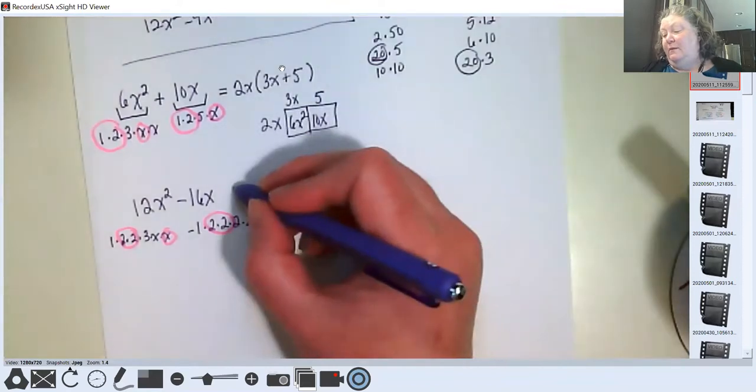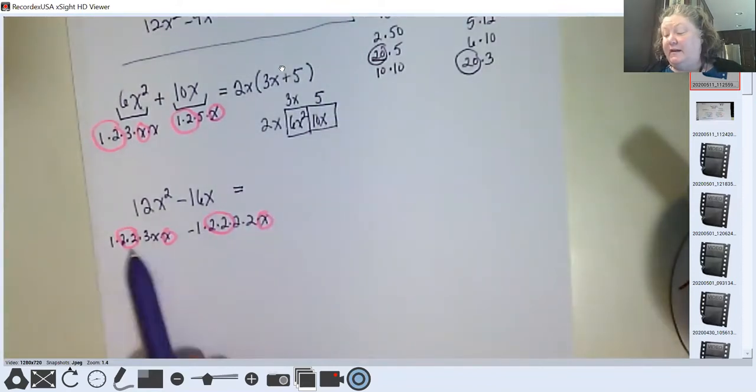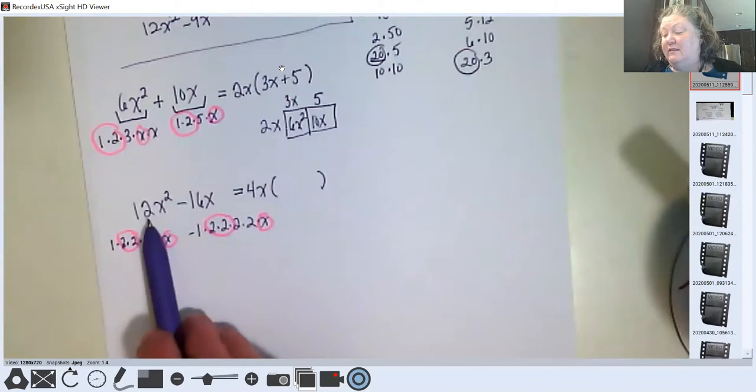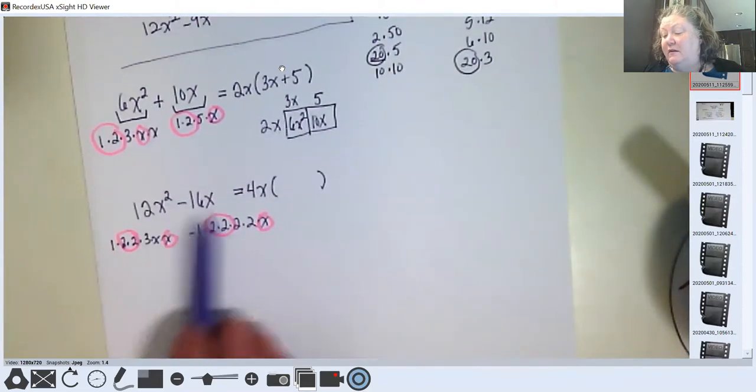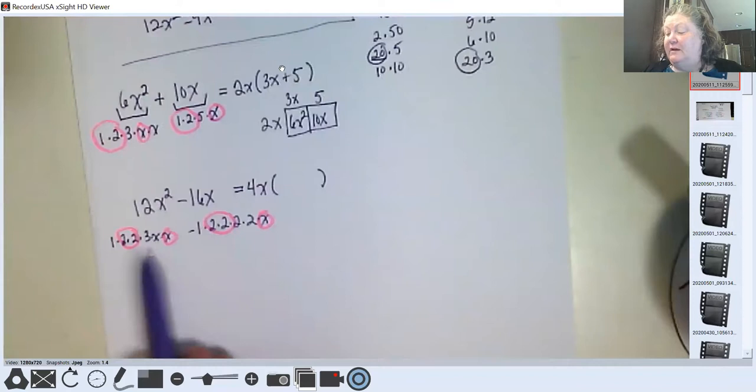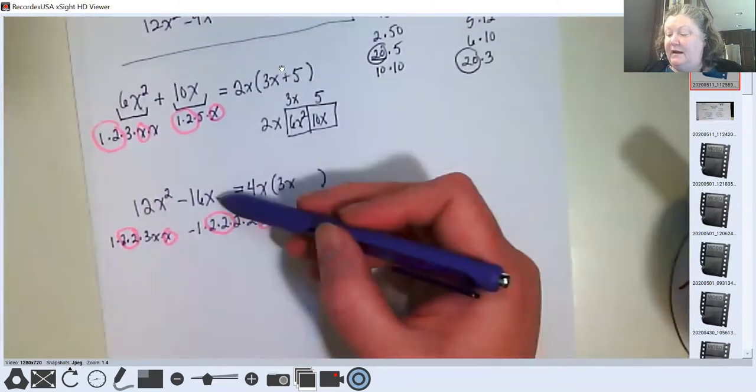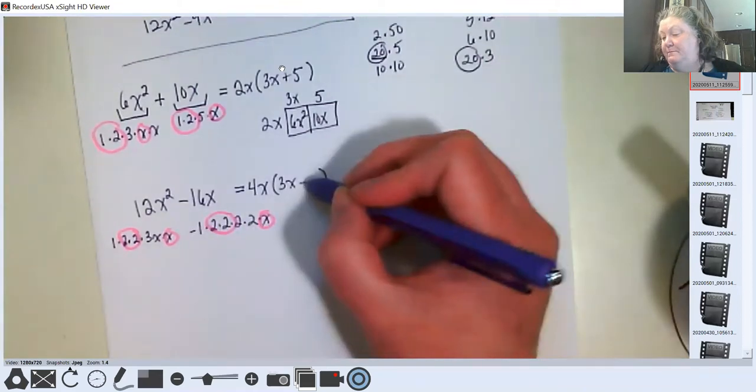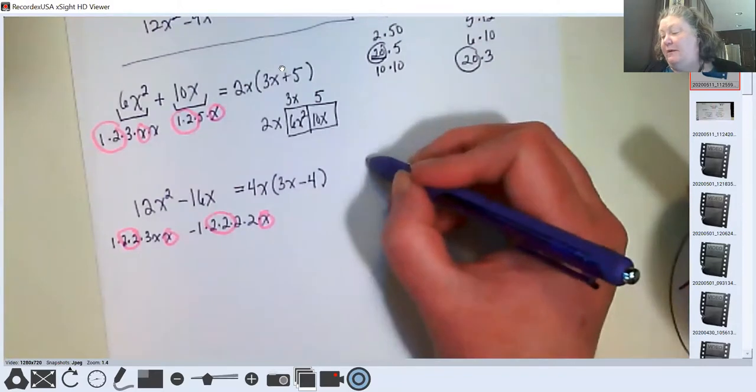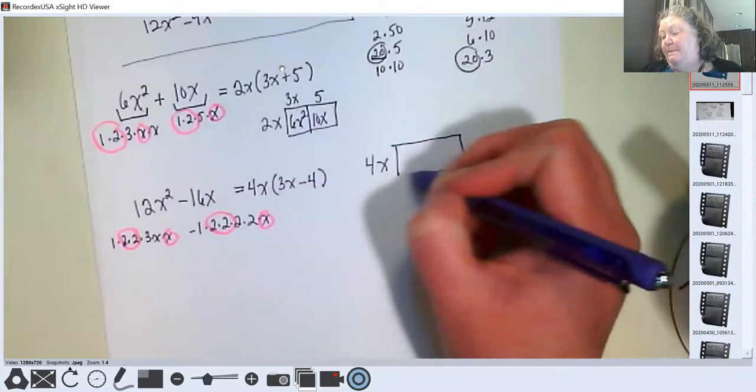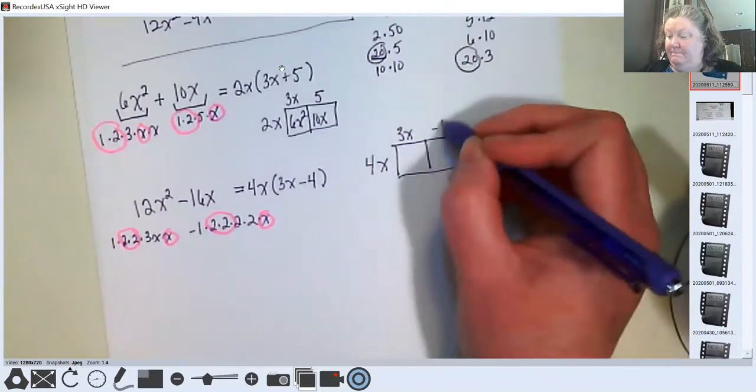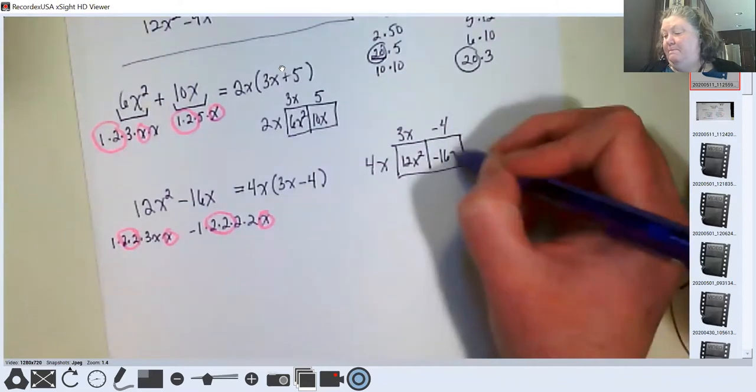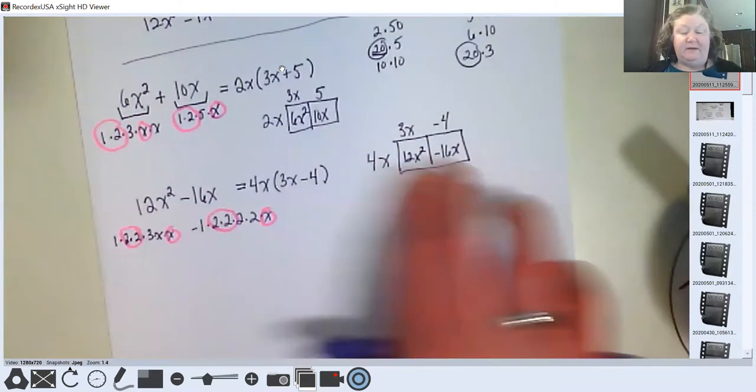So when I rewrite this or I undistribute it, I'm dividing out the 4. And what goes inside the parentheses is what's left of these two terms. After I divide out 4x, what's left here is 3x. And after dividing out the 4x here, what's left is negative 4. I can check my work. Those terms match these terms so I know I did it right.